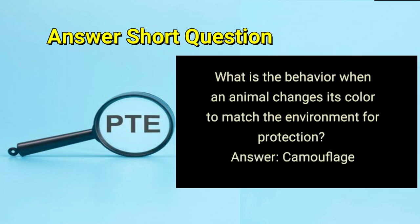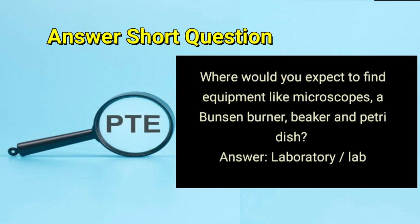What is the behavior when an animal changes its color to match the environment for protection? Answer: camouflage. Where would you expect to find equipment like microscopes, a Bunsen burner, beaker and petri dish? Answer: laboratory or lab.